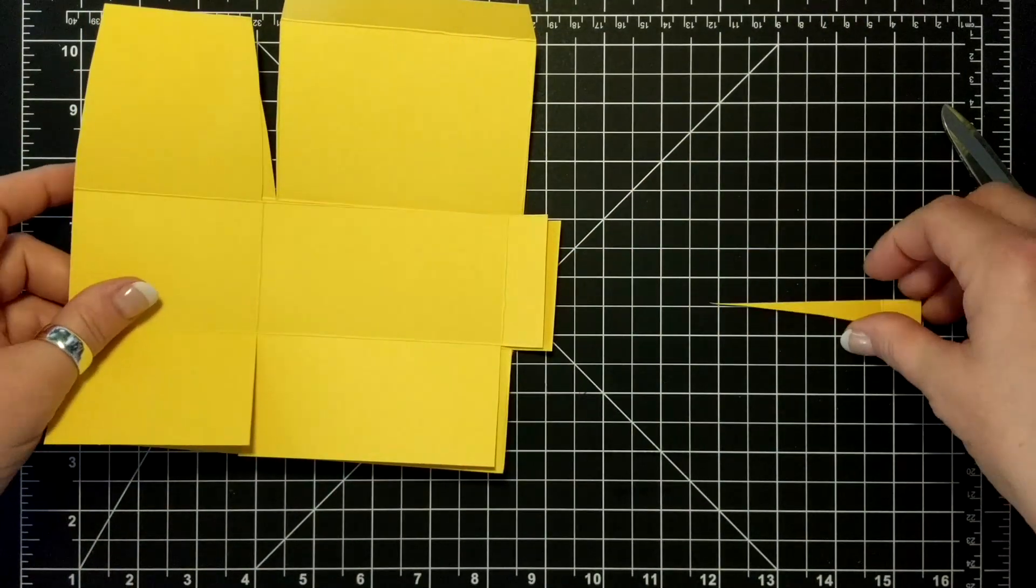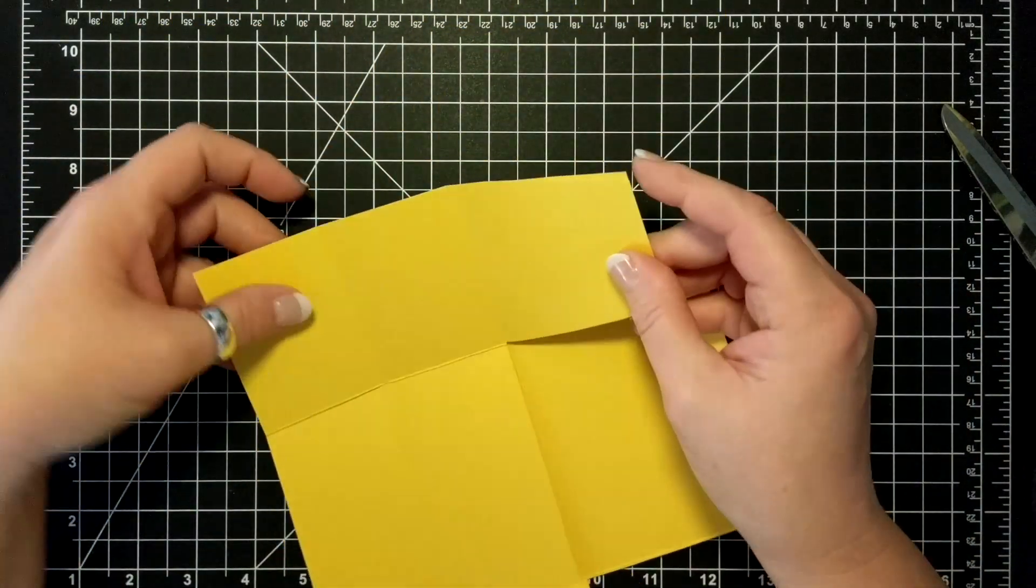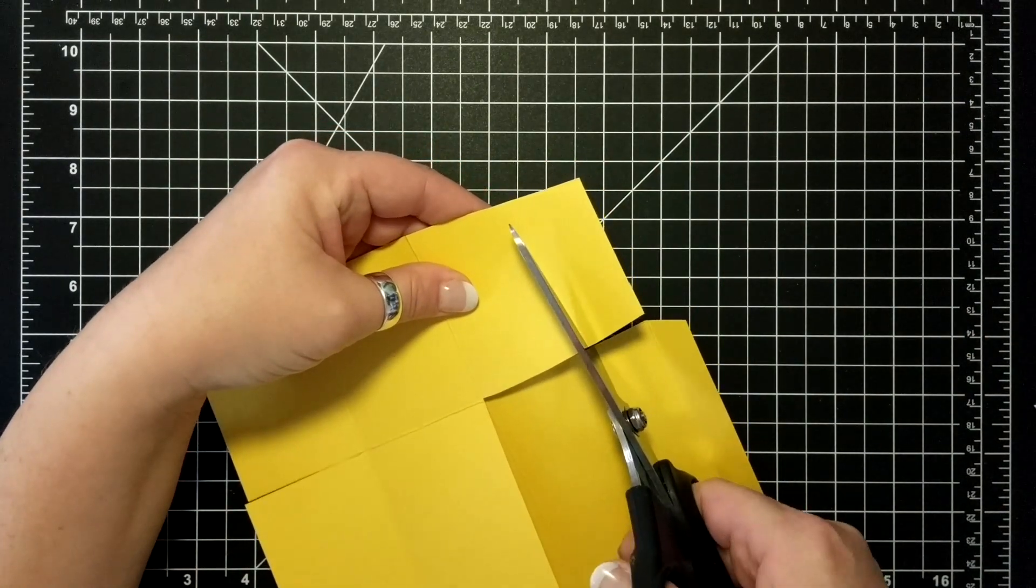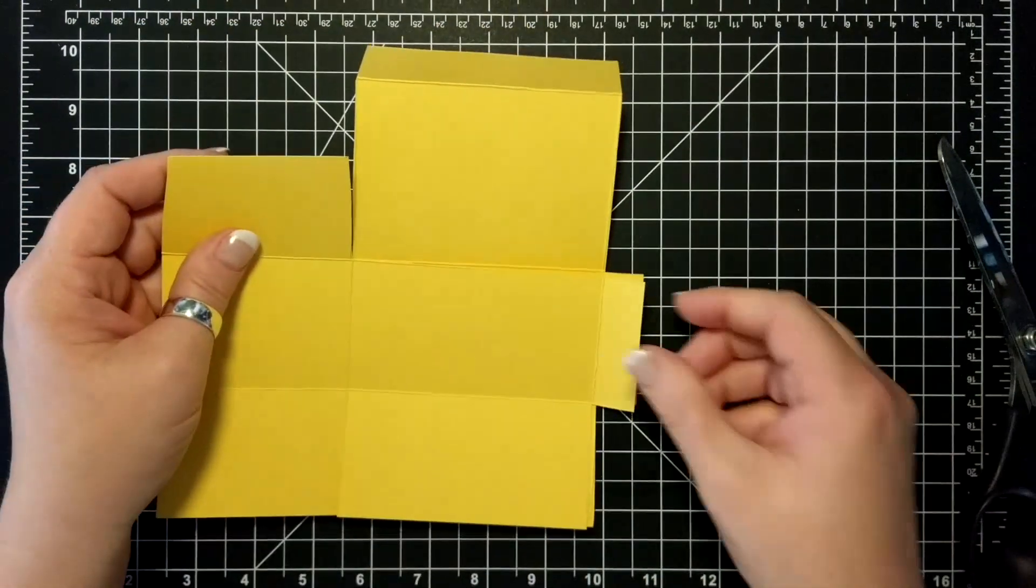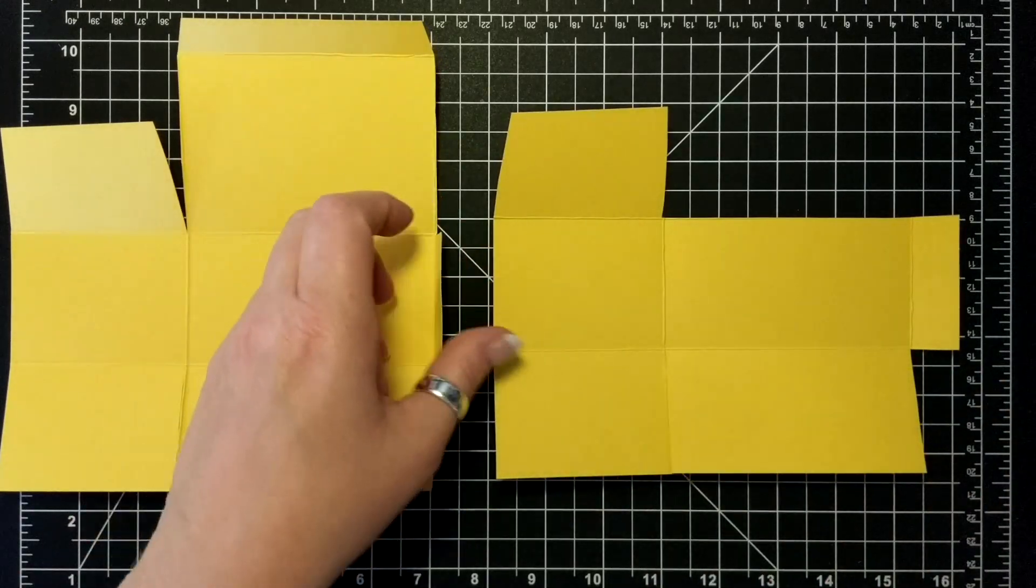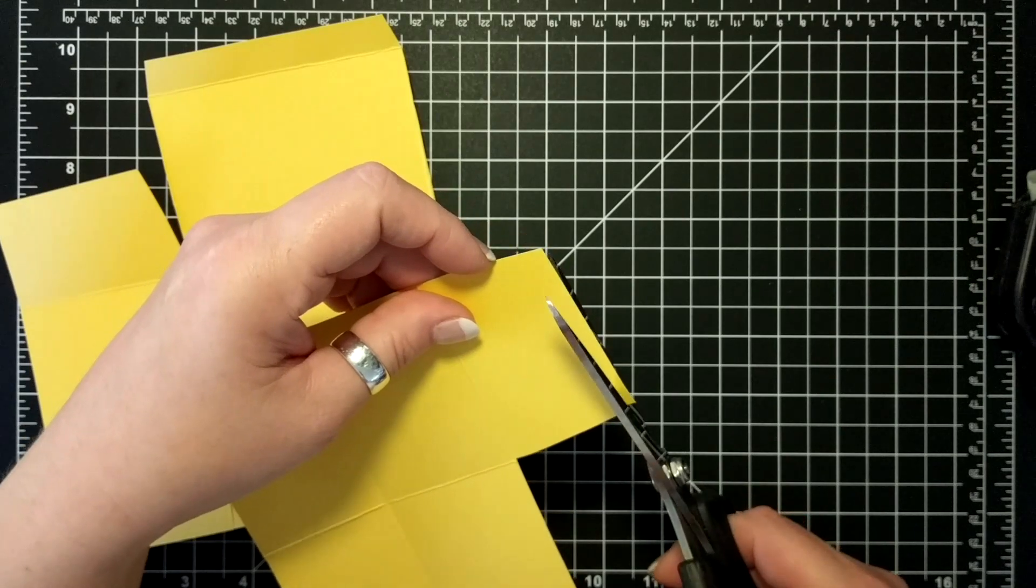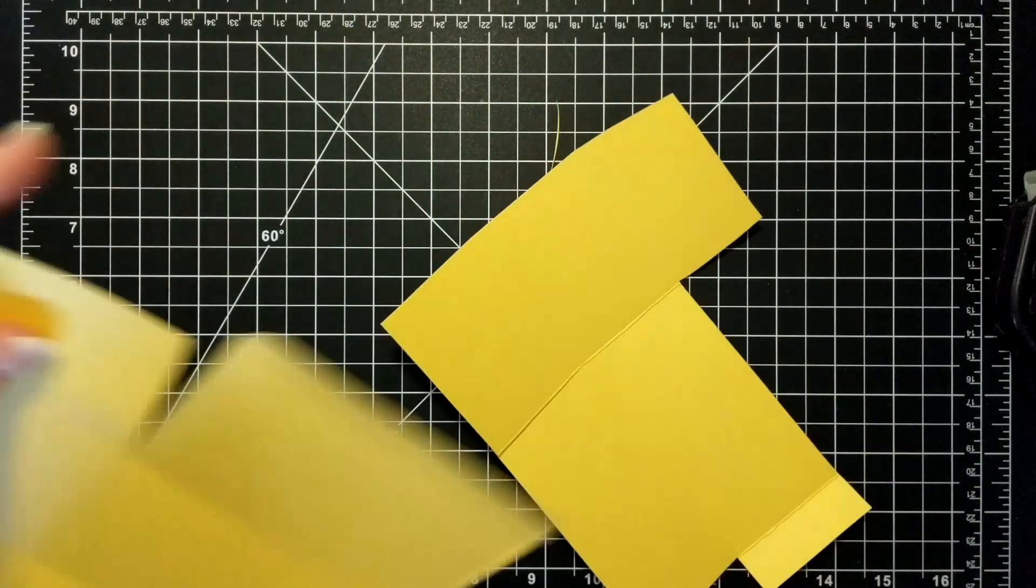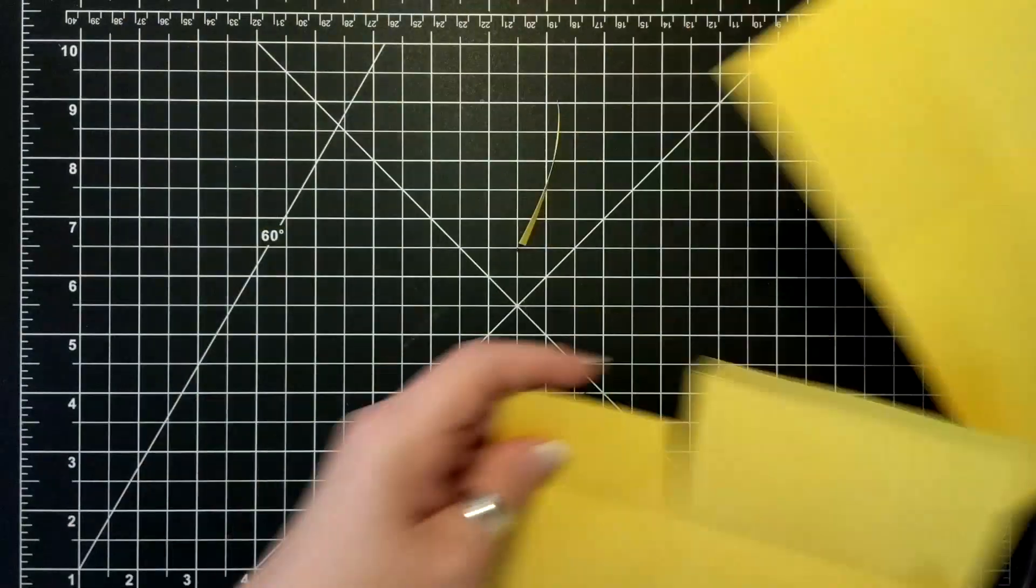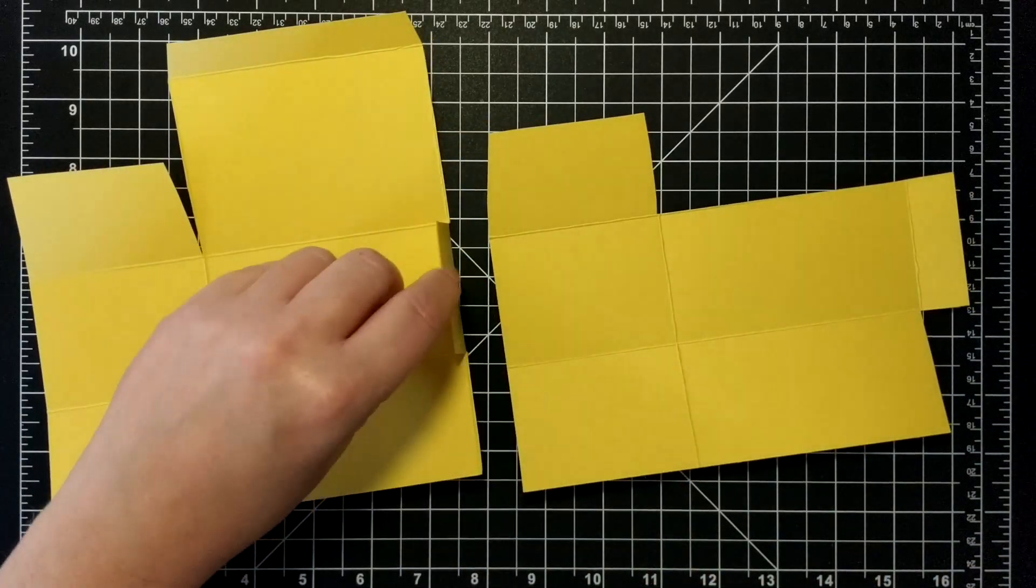All right. So I'm going to place these two together and I'm just going to take off maybe an inch. Okay. That's that. Oh my goodness. Look how crooked that was.